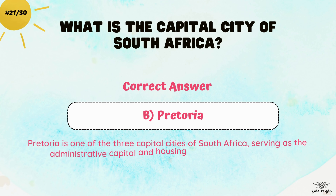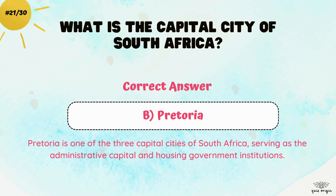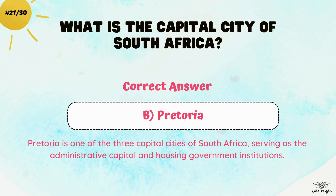The correct answer is B. Pretoria. Pretoria is one of the three capital cities of South Africa, serving as the administrative capital and housing government institutions.